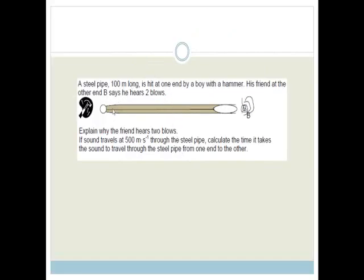A steel pipe, 100 meters long, is hit on one end by a boy with a hammer. His friend at the other end says he hears two blows. Explain why the friend hears two blows. Well, let's think about it. We know that sound is going to travel in 360 degree direction. So, sound is going to travel through the air. So, the friend is going to hear the sound that the hammer makes on the metal, and the sound that emanated out through the air. But he's also going to hear the sound as it comes through the metal pipe. So, that is why he hears two blows.